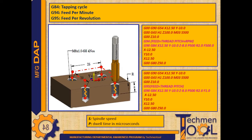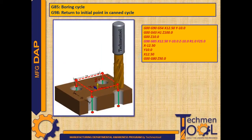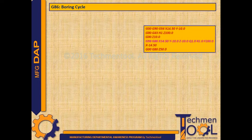After the tapping cycle, G80 code cancels it and G98 code returns the tool to the initial point. G85 is used for boring cycle. In this sample program, after the rapid movements as per instructed positions, the boring cycle starts along with the position X12.5 Y-10 Z-10 at the feed rate of 25 microns. Here R is the R plane or reference plane. After the boring cycle, G80 code cancels it and G98 code returns the tool to the initial point.